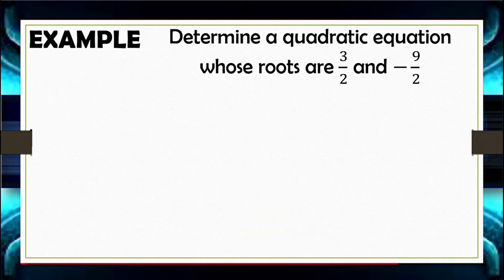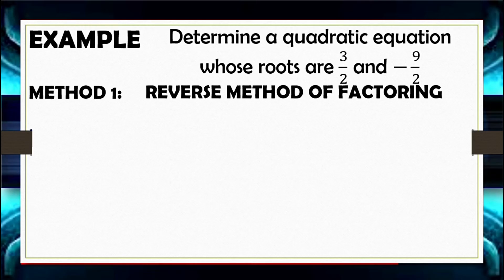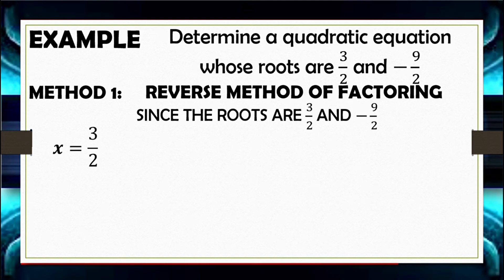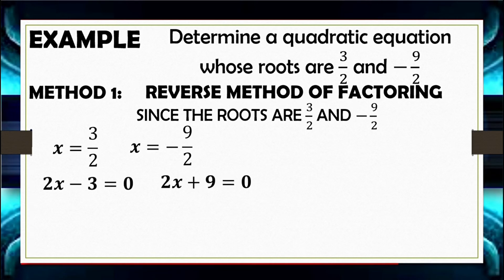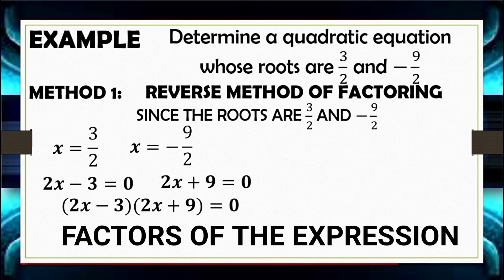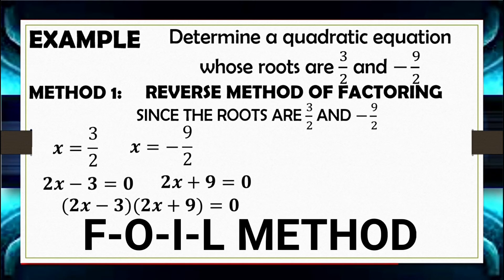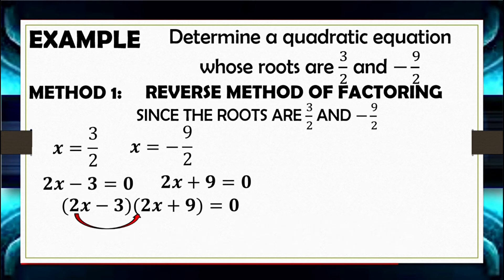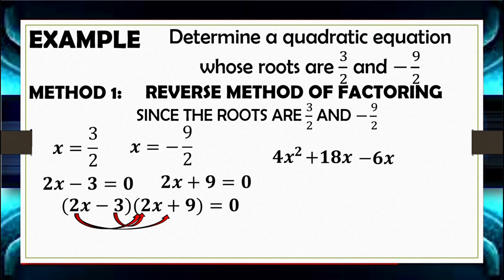Let's determine the quadratic equation whose roots are 3 halves and negative 9 halves. Using the reverse method of factoring: X equals 3 halves gives 2X minus 3 equals 0, and X equals negative 9 halves gives 2X plus 9 equals 0. Quantity 2X minus 3 times quantity 2X plus 9 equals 0. Applying FOIL: 2X times 2X is 4X squared, 2X times 9 is 18X, negative 3 times 2X is negative 6X, and negative 3 times 9 is negative 27.